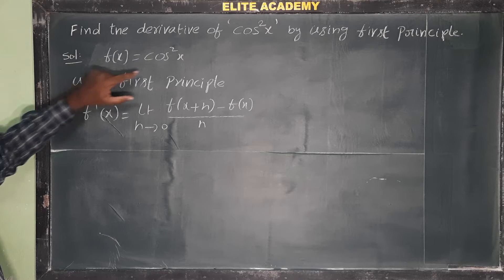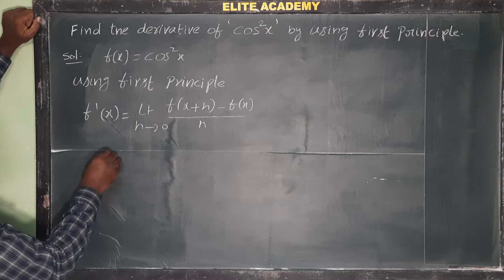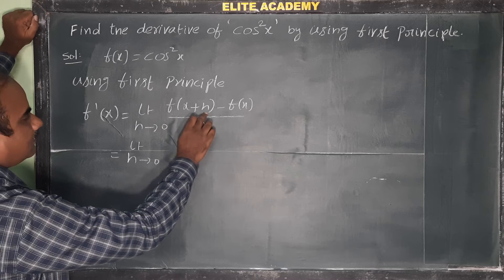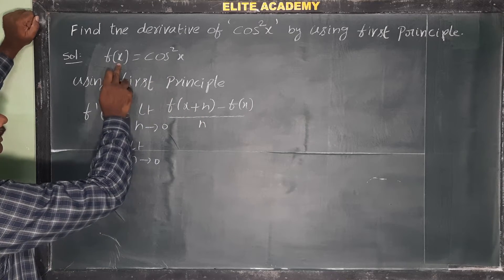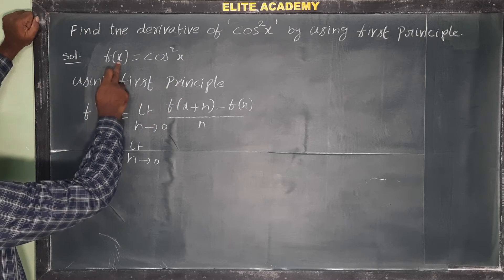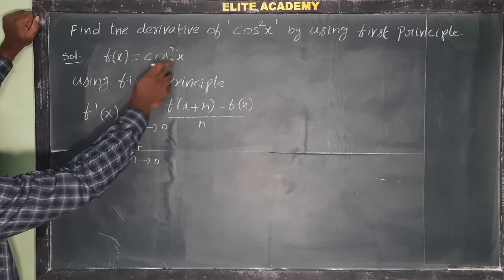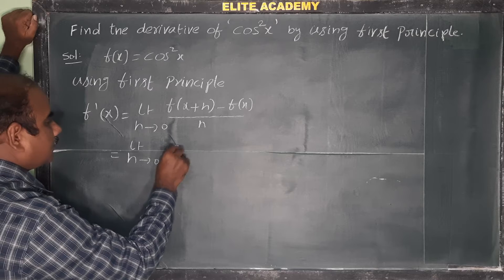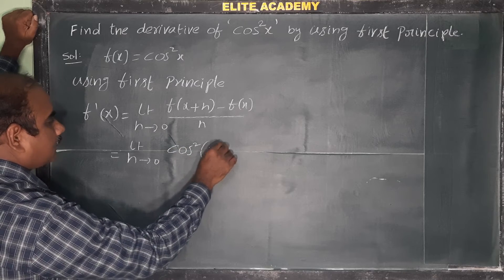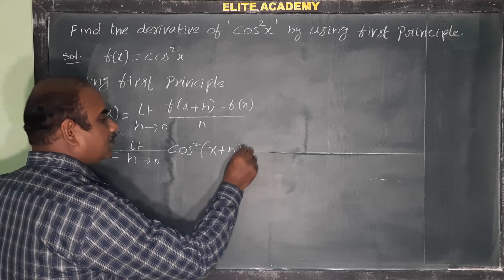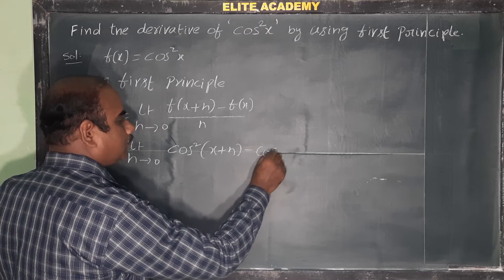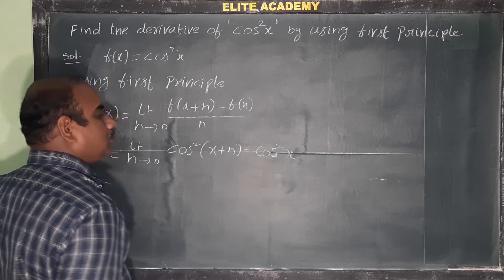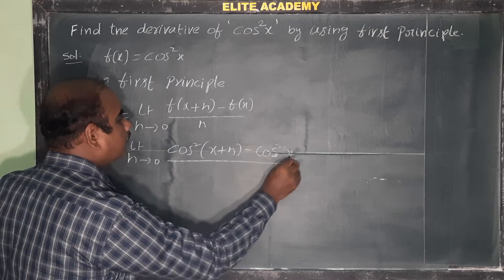Using this formula, we will find the derivative of this function. Let us substitute: limit h tends to 0. Here f(x) means cos²x, so f(x+h) can be written as cos²(x+h). So the expression becomes limit h tends to 0 of [cos²(x+h) - cos²x] / h.